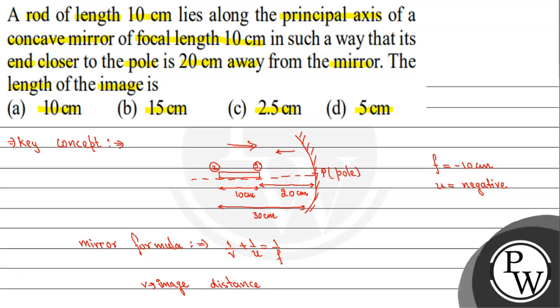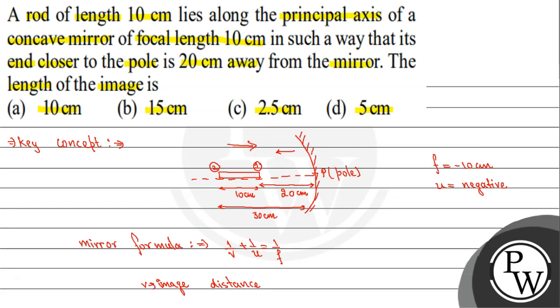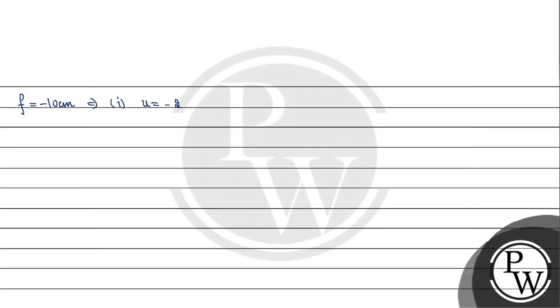We will find where the image of the first end forms, then where the image of the second end forms. Then we subtract the distances to get the length of the image. For the first end, applying the mirror formula: 1/v + 1/u = 1/f.